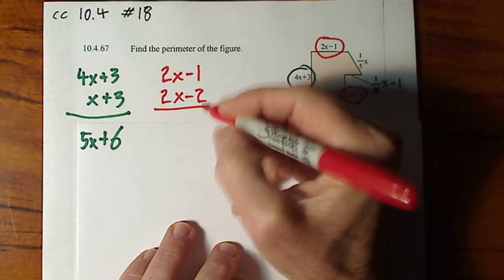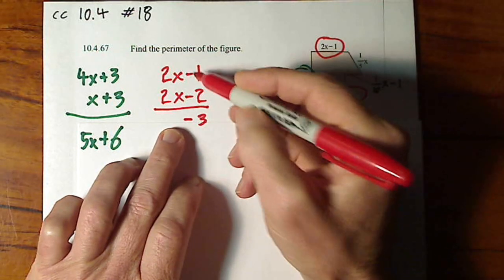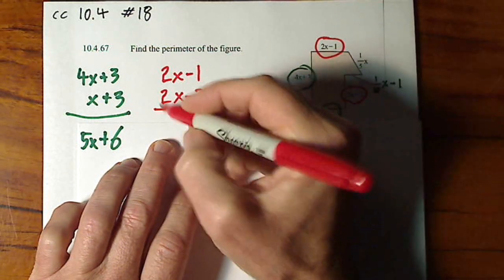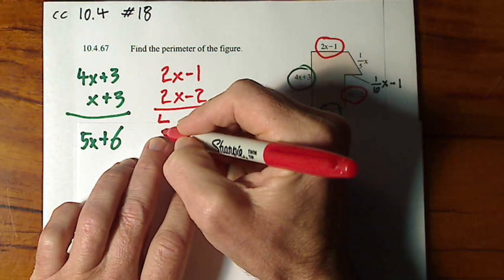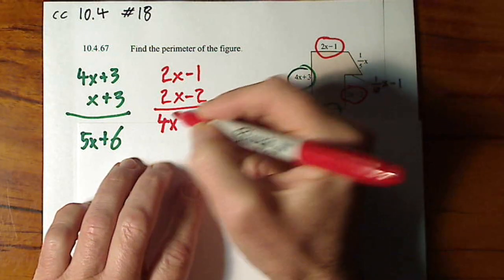When we combine those we get 4x minus 3. The signs are the same. You add and keep the sign. 2x and 2x yields 4x. I'm having a little trouble with my paper here.